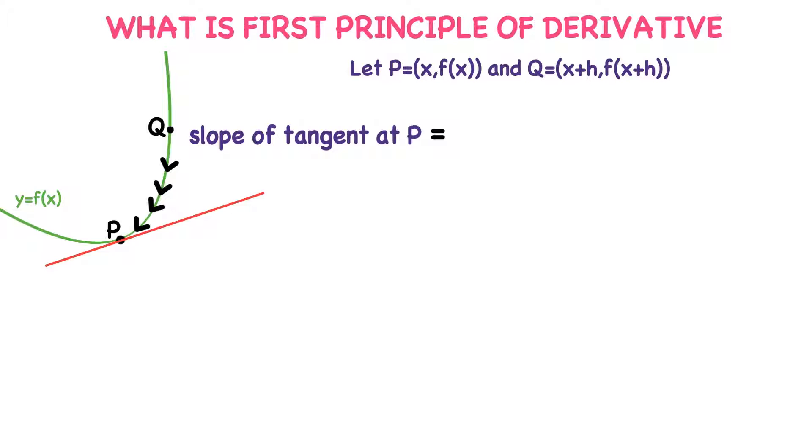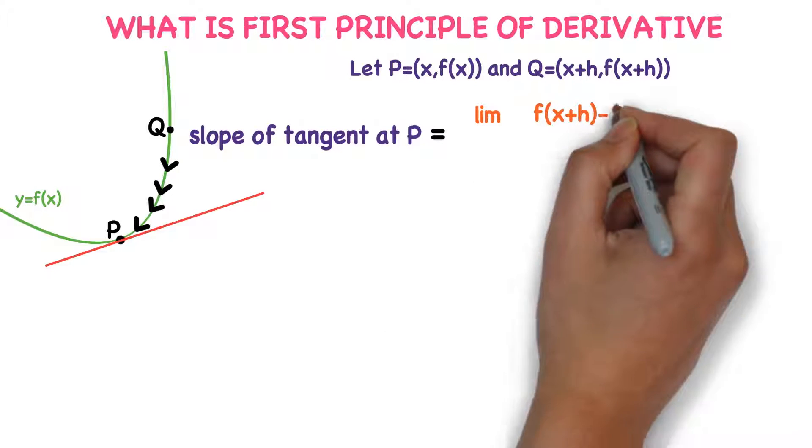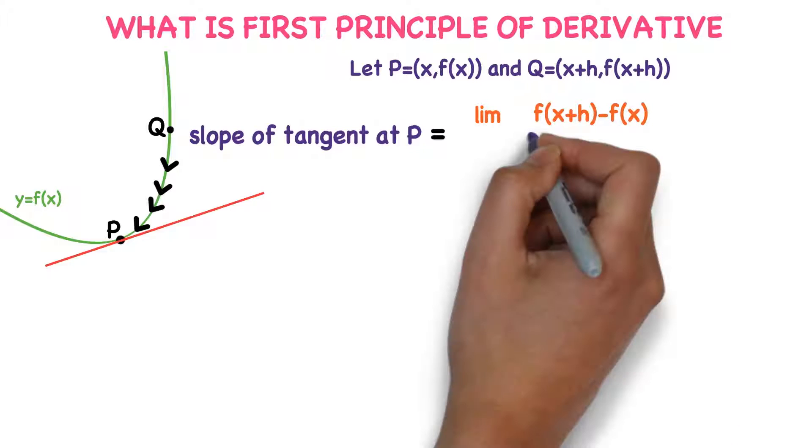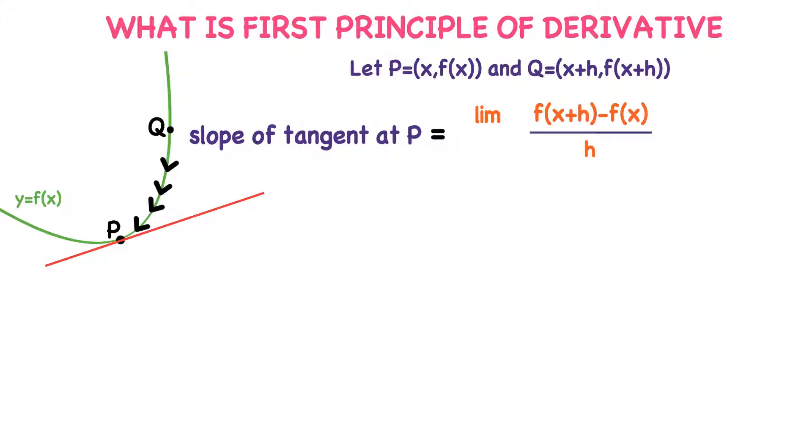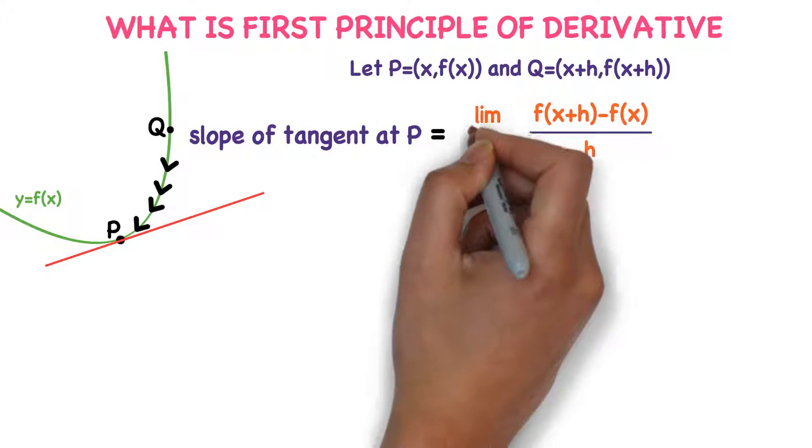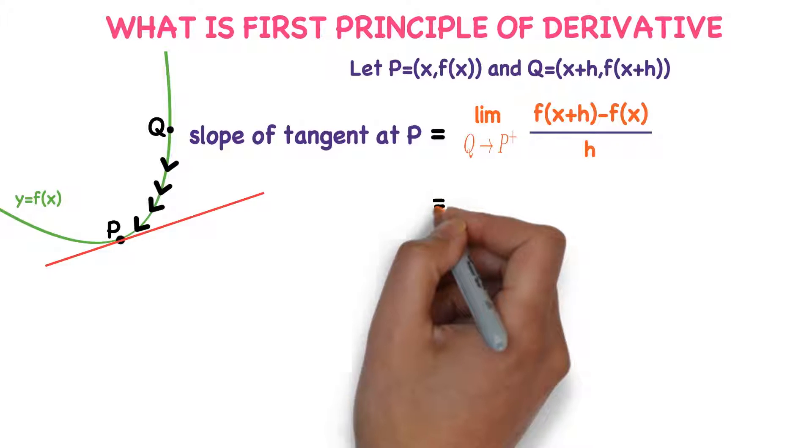When Q approaches P from the right, I'll write the limiting position of [f(x+h) - f(x)] divided by h. This is the slope of secant line PQ. The limiting position of slope of secant line PQ when Q approaches P from the right is the slope of tangent at P.